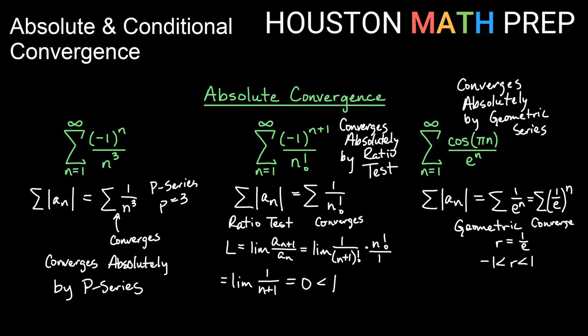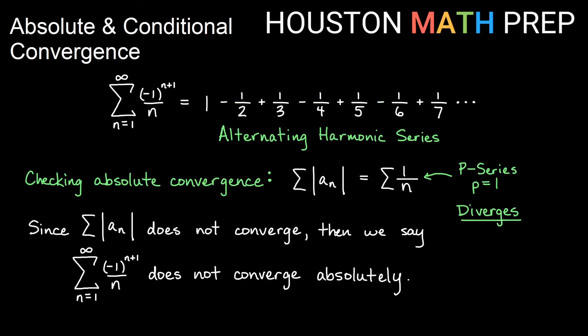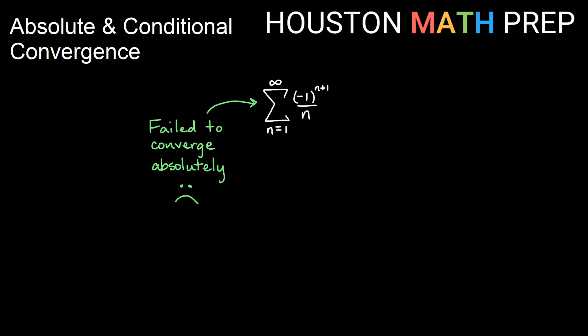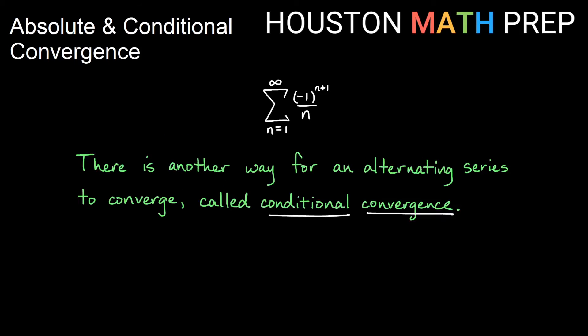That's a bit on absolute convergence. The alternating harmonic series does some weird things. If we check absolute convergence for it, we'd be checking the sum of 1/n, which is a p-series with p = 1, so it diverges. That doesn't mean the overall alternating harmonic series diverges — it just means it fails to converge absolutely. It turns out there's another way it might still converge: conditional convergence.